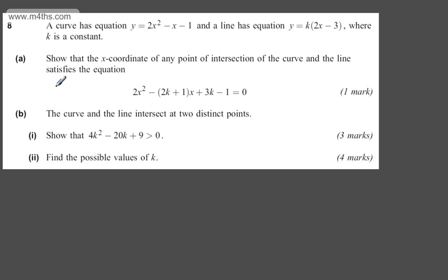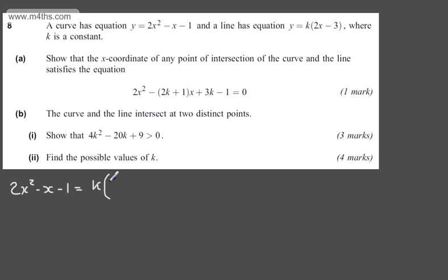In part A, for one mark, we need to show that the x-coordinate of any point of intersection of the curve and the line satisfies the equation 2x squared minus the quantity 2k plus 1 times x plus 3k minus 1 equals 0. Since y equals 2x squared minus x minus 1, and y equals k multiplied by 2x minus 3, we can set those equal: 2x squared minus x minus 1 equals k multiplied by 2x minus 3.